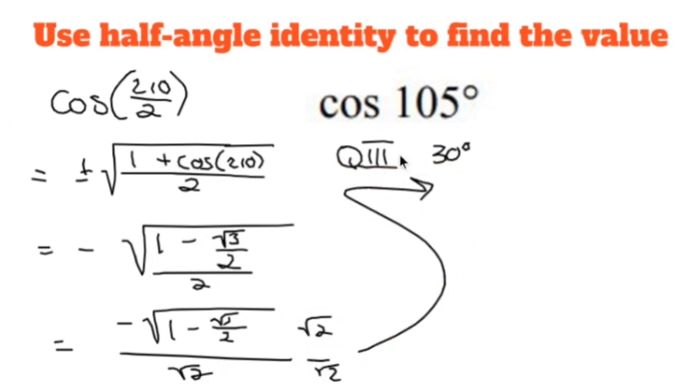That's going to give me negative, and a square root times a square root means I can just multiply these guys together, so I can distribute within the square root. So 2 times 1 is 2, minus 2 times root 3 over 2 is just root 3.